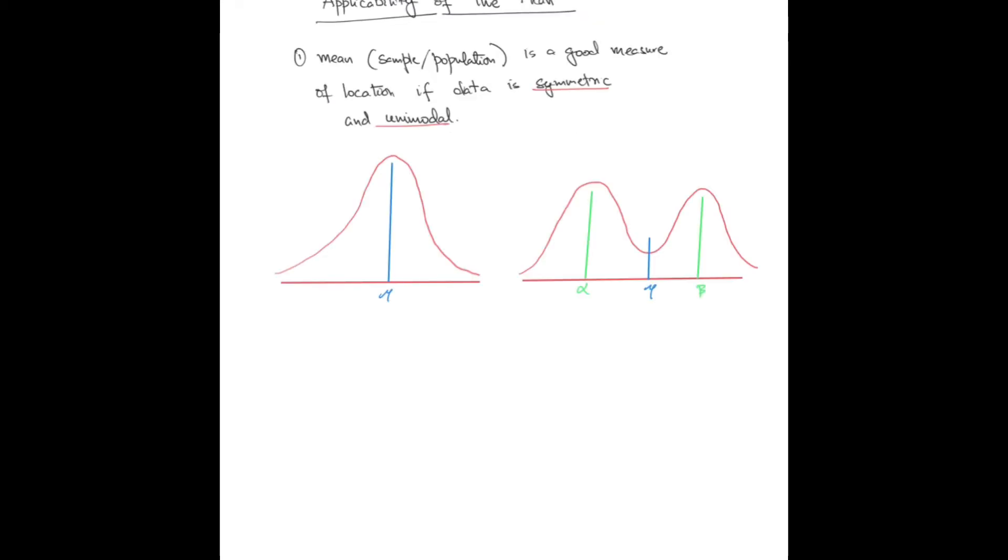To understand the applicability of the sample mean, we have to understand its properties. It's going to be a good measure of location if the data is symmetric and unimodal. In the first picture, the data is symmetric and unimodal, and as a result it's evenly distributed around the mean which lies in the middle. In the second picture, even though it is symmetric, it's bimodal data and the mean lies in the middle but the data is really concentrated at alpha and beta. As a result, in the first case the mean is a good measure of location, whereas in the picture on the right the mean does not end up being a good measure of location.